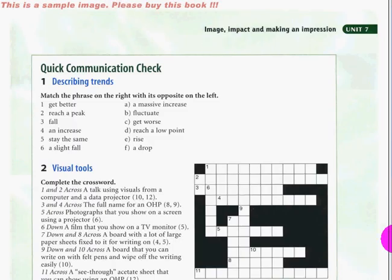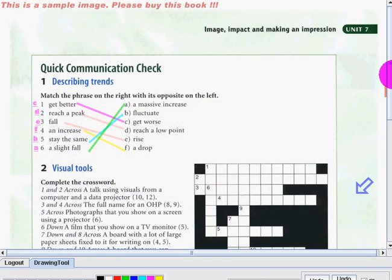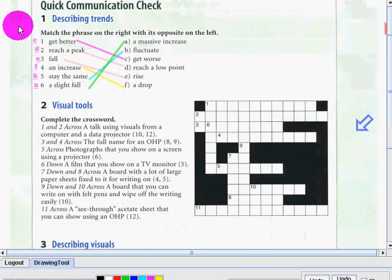Here are the answers. Match the phrase on the right with its opposite on the left. Let's say for number one, get better, it's get worst. Number two, reach a peak, reach a low point. Number three, fall, rise. An increase, a drop. Stay the same, fluctuate, and then a slight fall, a massive increase.